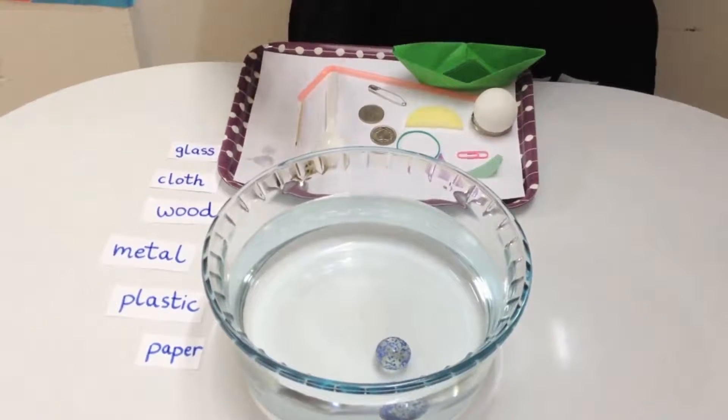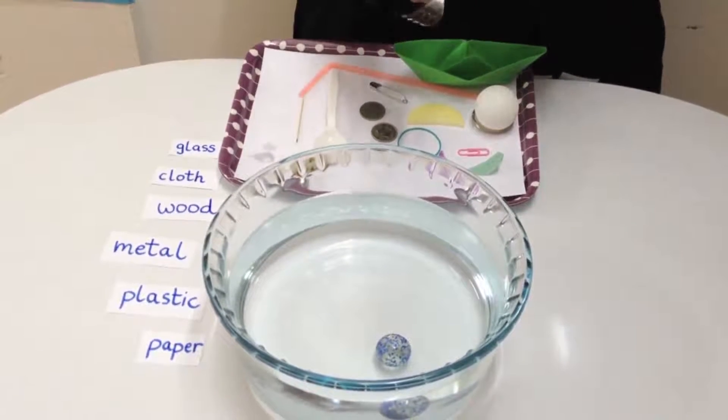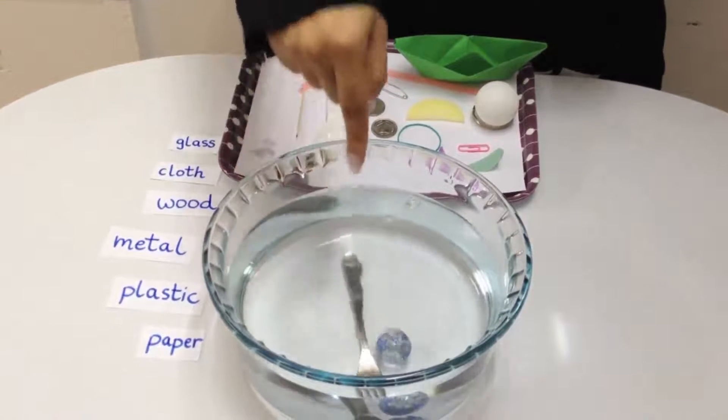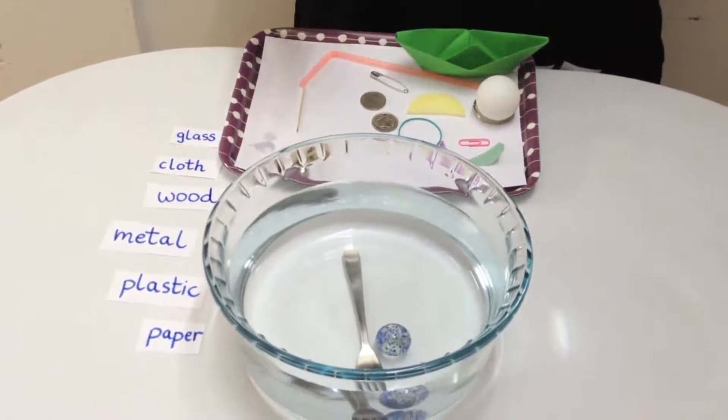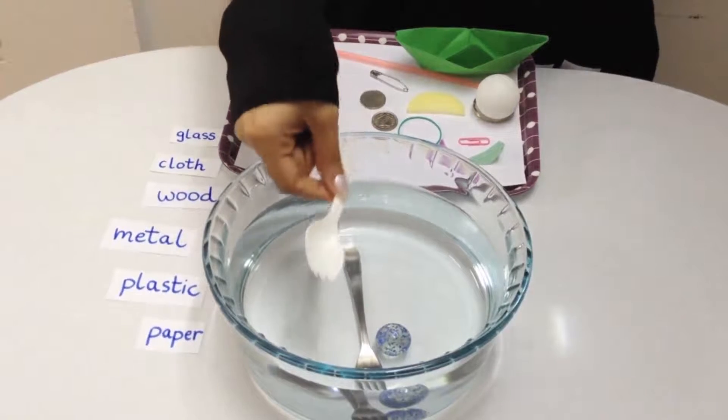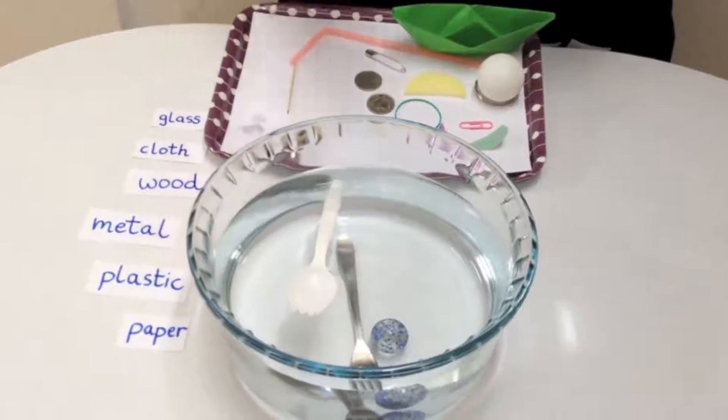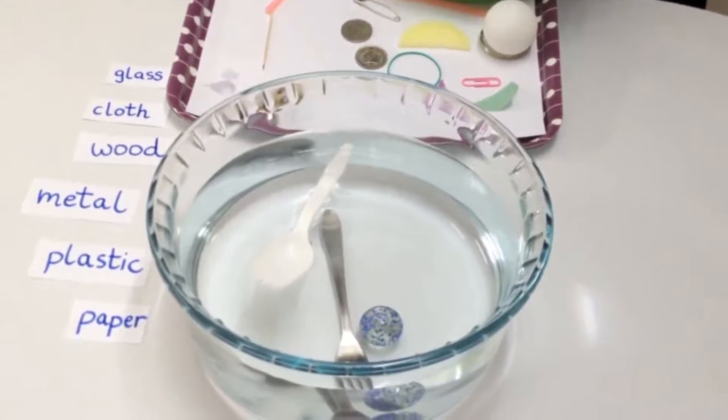The next object is a fork which is made of steel. You can see that this too has sunk. Now I'm putting another fork which is made of plastic. You can observe that it is not going to the bottom. It's floating at the surface.